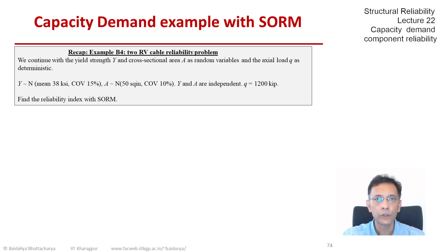So there are two random variables Y and A. The load Q is deterministic. So the first few steps in SORM are the same as those in FORM. So we write the limit equation and let us say we choose the Hasofer-Lind transformation between X and U.